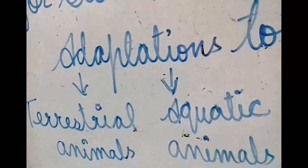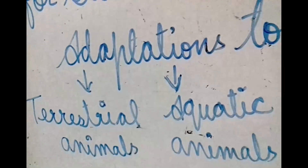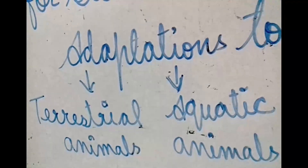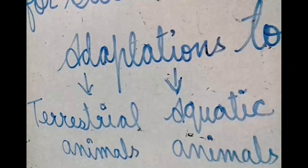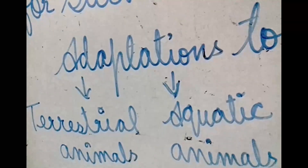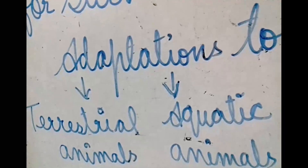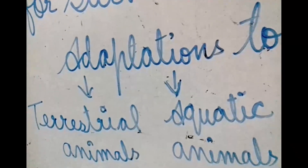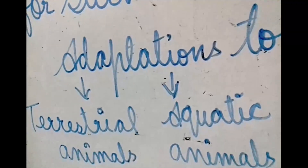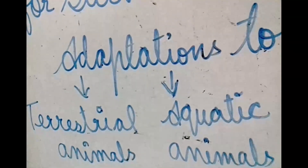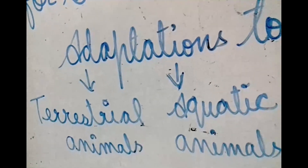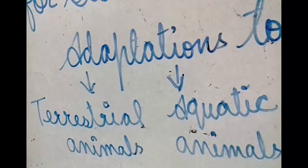They have four legs and can walk, jump, and move on land to hunt and defend themselves. Exception: snakes do not have legs but possess scales or plates which enable them to crawl. Animals living in cold regions like yak and polar bear have a thick skin layer with fur to keep them warm.